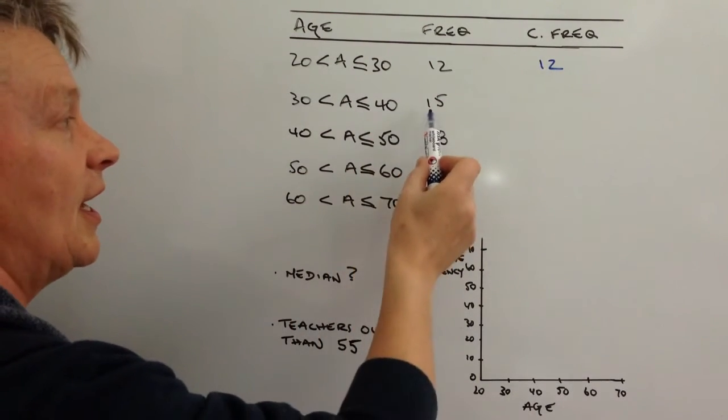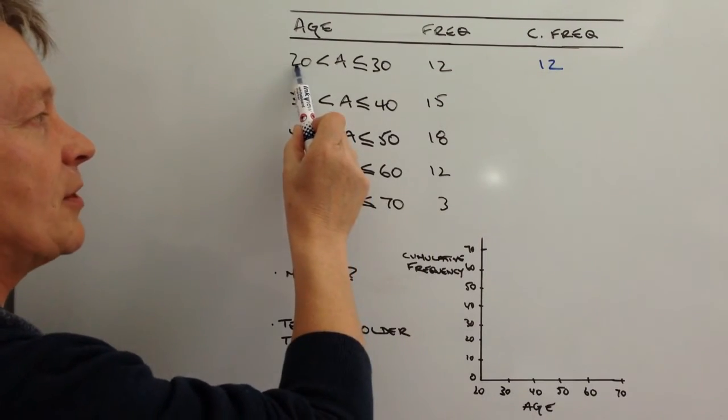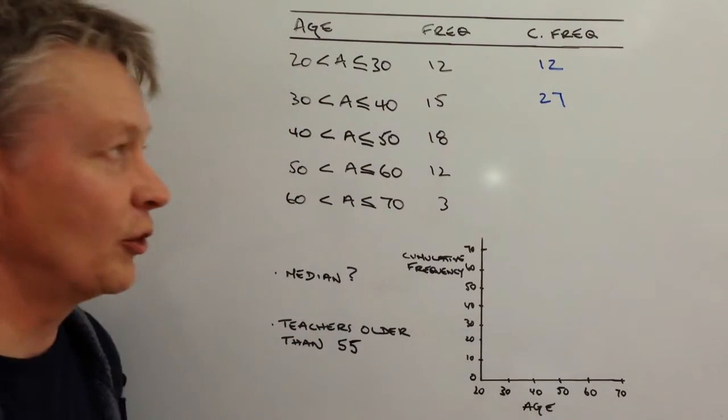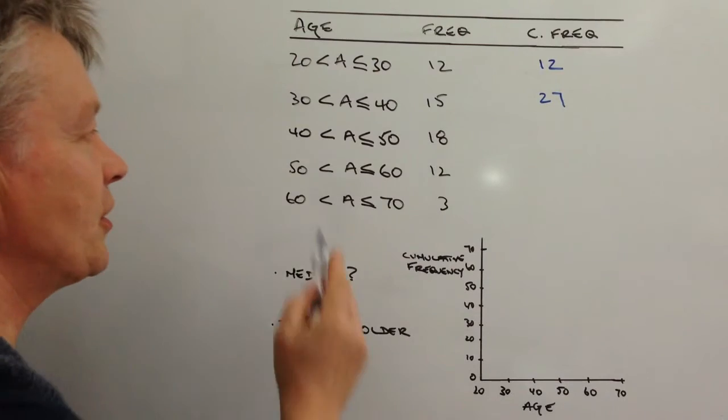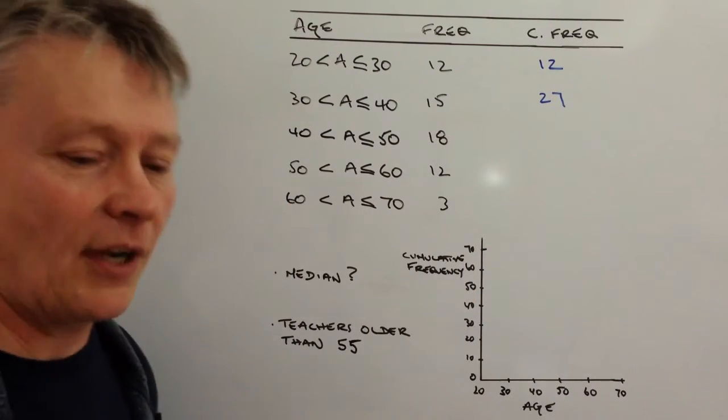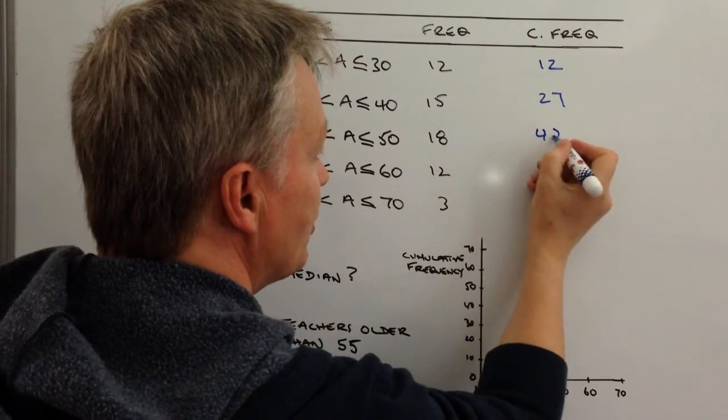So the accumulation is between 20 and 40, which means those two are added together, so the second group is 27. The third group is teachers between 40 and 50, and there's 18 of those, and we're going to add those as accumulation and that's going to be 45.